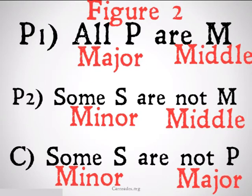It's figure two because the middle terms are all on the far right side. They are the second term. They are the predicate of each of our two premises.